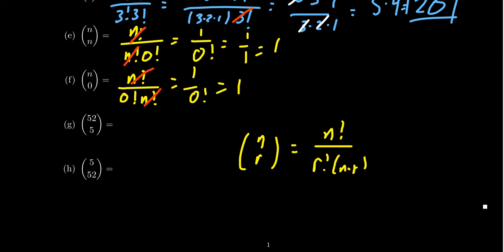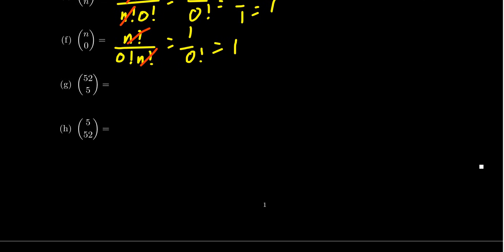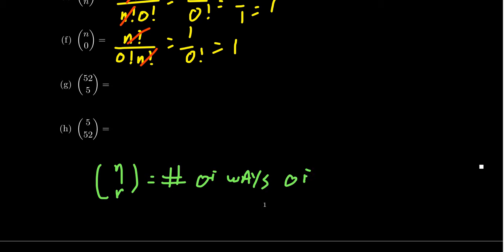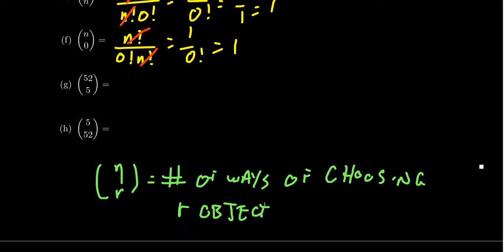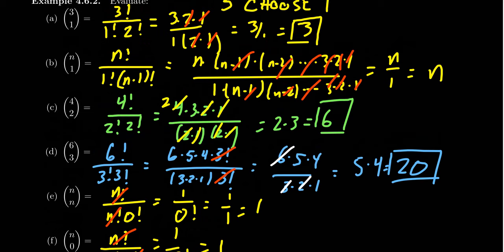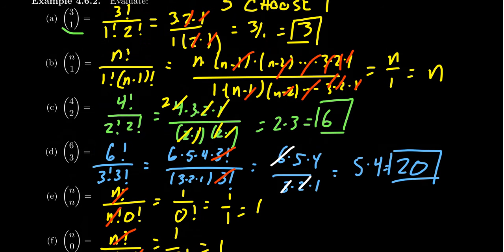Another important observation: the binomial coefficient n choose r equals the number of ways of choosing r objects from a collection of n objects. For example, 3 choose 1: if I have strawberry, chocolate, and vanilla ice cream and have to choose one flavor, I have 3 options. So 3 choose 1 is 3. And n choose 1 — if I have n options and choose one, there are n ways of doing that.